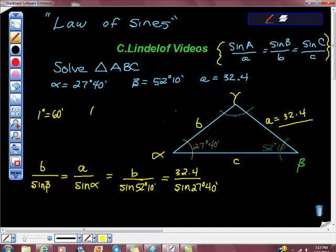So I'm going to take 180 degrees minus 27 degrees, 40 minutes, plus 52 degrees, 10 minutes. That's 180 minus 79 degrees, 50 minutes. What I'm going to do here is say that this is 179 degrees plus 60 minutes.